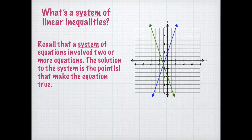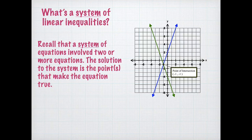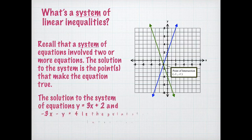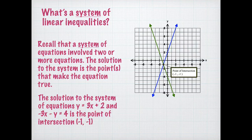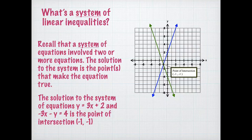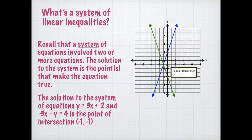For example, if you look at this system, the point of intersection is the point negative 1, negative 1. So the solution to the system — y equals 3x plus 2, and negative 3x minus y equals 4 — is the point negative 1, negative 1.